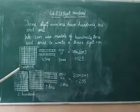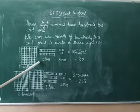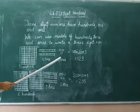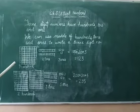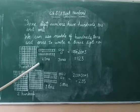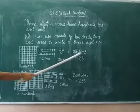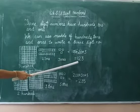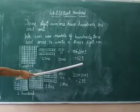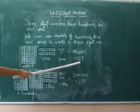These are 1 hundred, 2 tens, 3 ones. Here is 1 hundred, 2 tens, 3 ones. 1 hundred, 2 tens, 3 ones. Add them up now, I got 123. That is equal to 123.